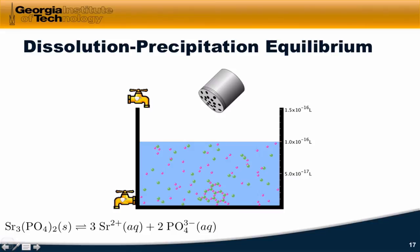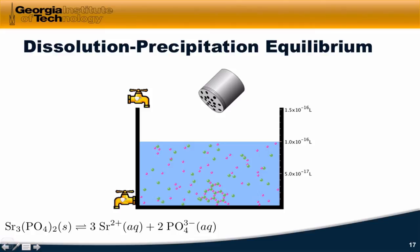Before getting into the quantitative treatment of solubility equilibria, let's look at dissolution and precipitation on the microscopic level. In particular, let's look at strontium phosphate, which is Sr3(PO4)2, dissolving to form three strontium 2+ cations and two phosphate anions. In this simulation environment, I have a salt shaker full of strontium phosphate and a beaker of water below.